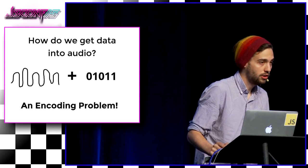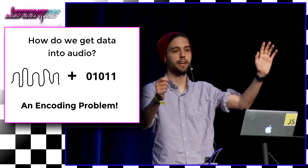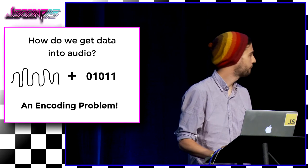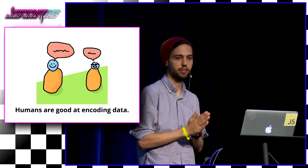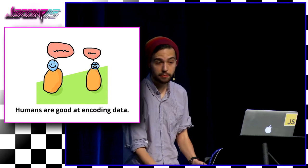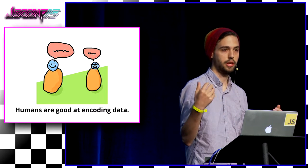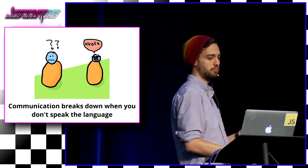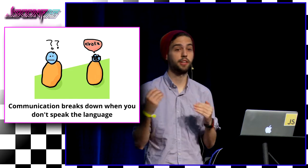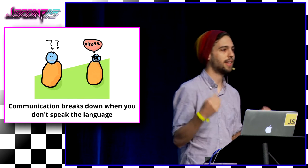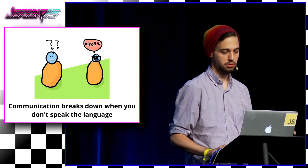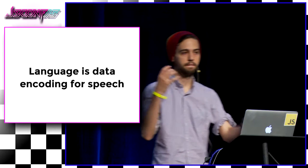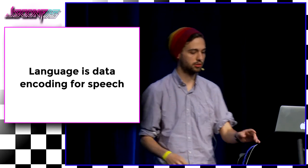How do we get data into audio? We have our waveform and our binary information. It's an encoding problem. Humans are pretty good at encoding data — I'm speaking to you, you can understand me, you can understand language, I'm communicating ideas. However, communication breaks down when you don't speak the language. Language becomes the data encoding for speech — this noise I'm making would mean nothing unless you knew English. It'd just be noise.